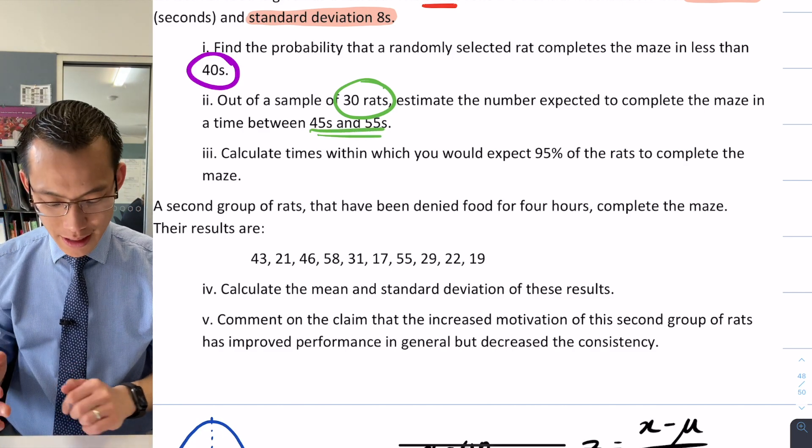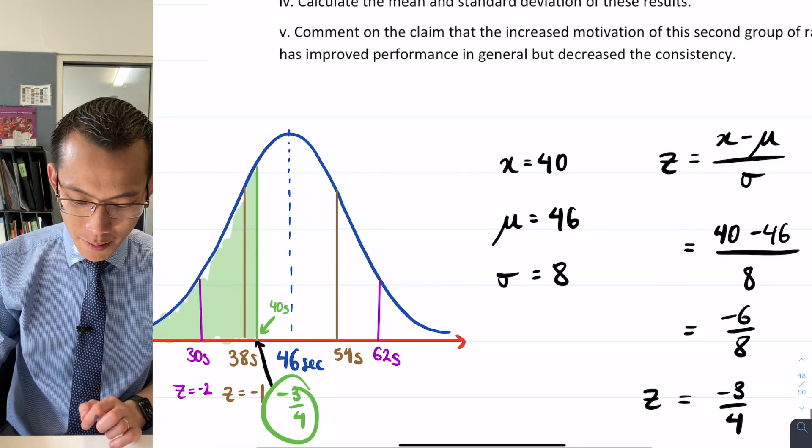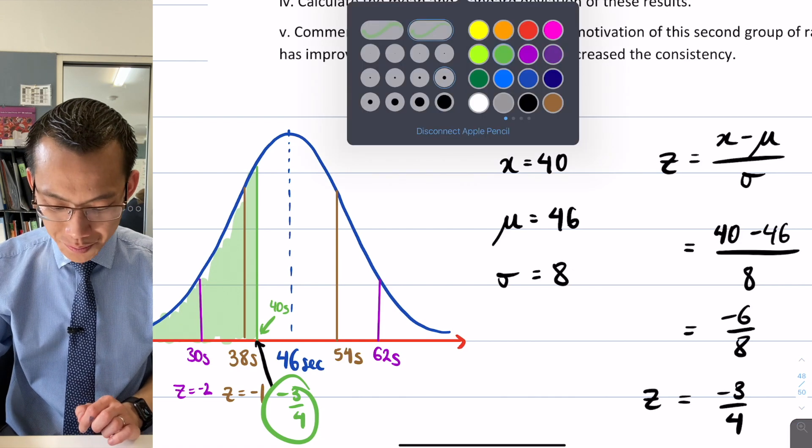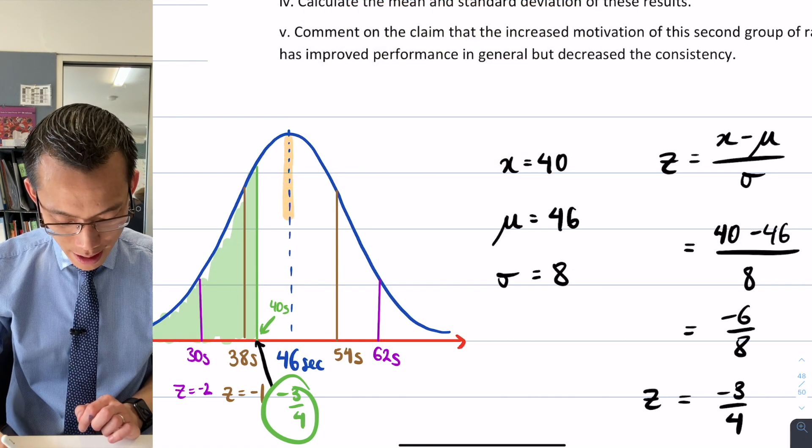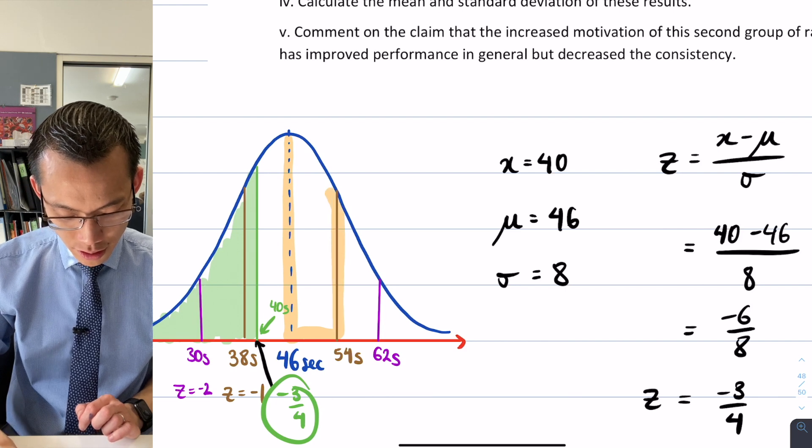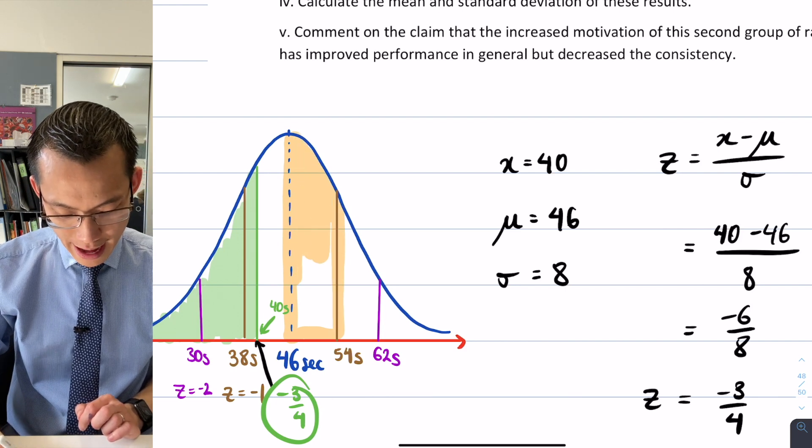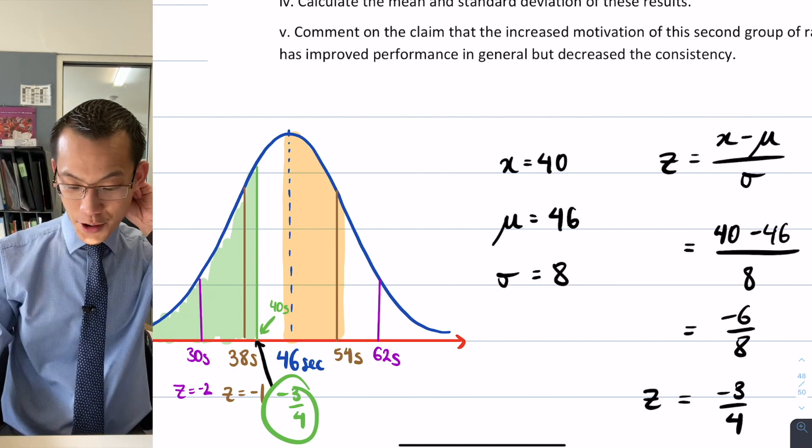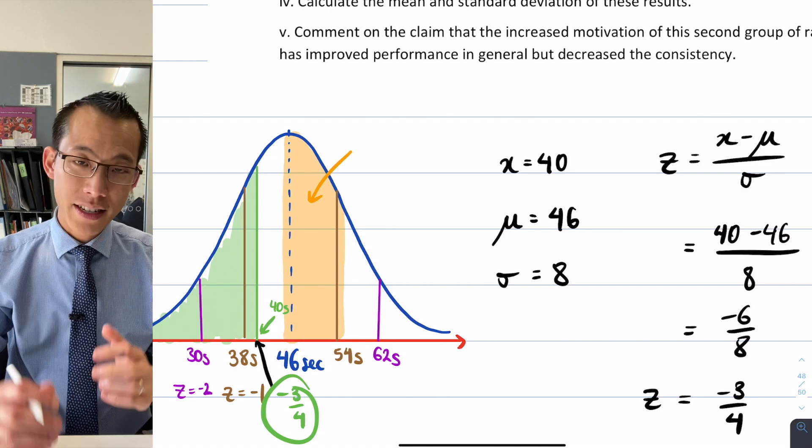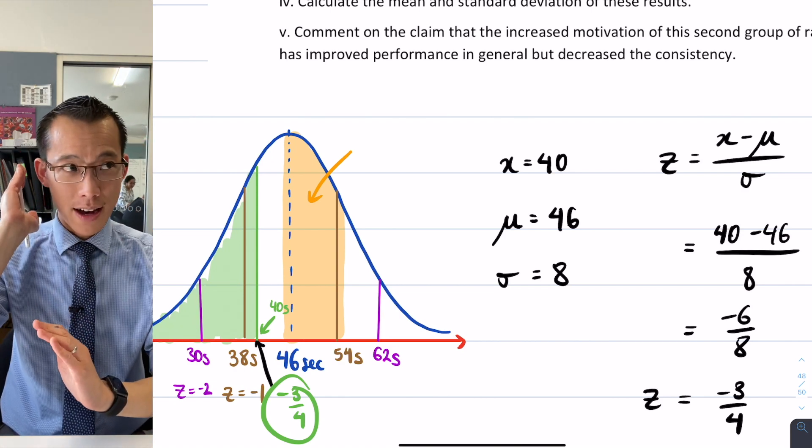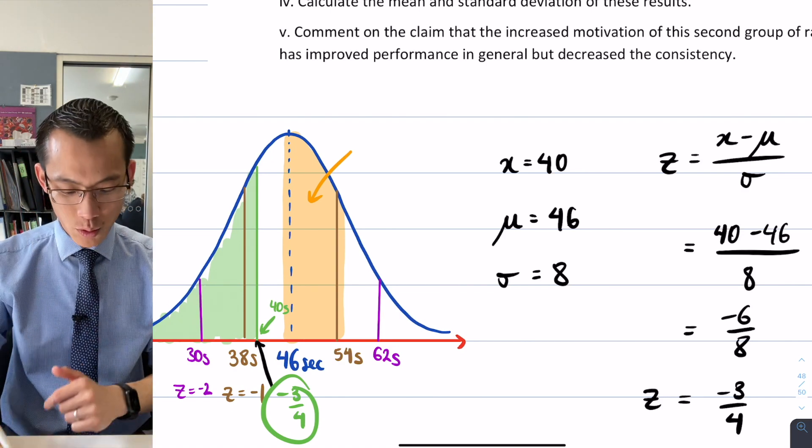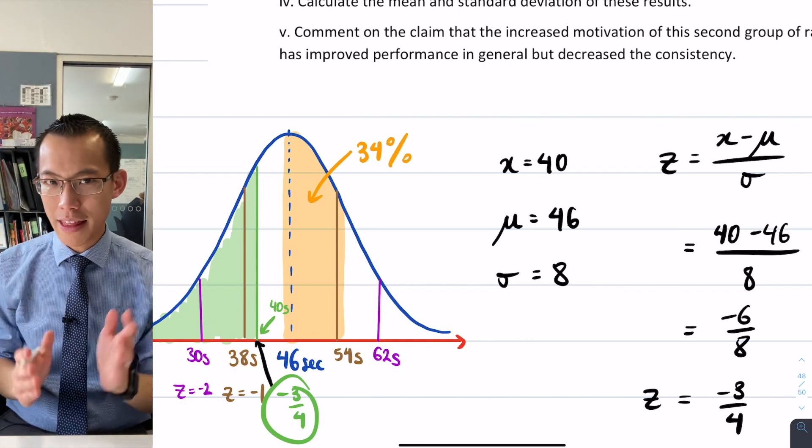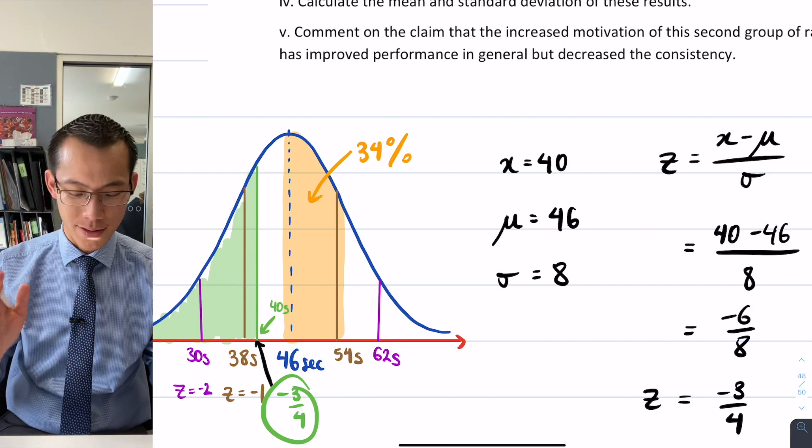Now in order to work this out, what I'm trying to find is where am I on my curve here? So 45 is just beneath the mean, so it's going to start around there, and then I have to go all the way up to 55, so it's just past that first standard deviation above the mean. So I already know because I have this as an empirical result that that one bar there between z equals 0 and z equals 1, I know that's 34%, so I'm going to expect a percentage a little more than that because I'm going a bit below and a bit above as well.